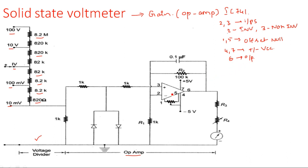Between pins 1 and 5, a potentiometer is connected that varies from minimum to maximum. The purpose of this potentiometer is to keep the output voltage equal to zero when there is no input. If any error occurs and a random value appears at the output when there is no input, it should be adjusted to zero using this potentiometer.